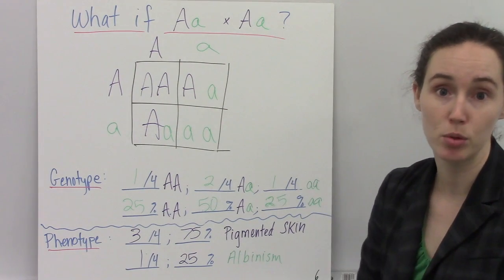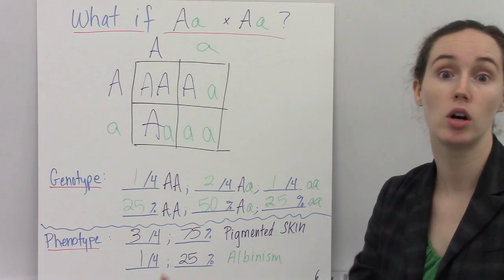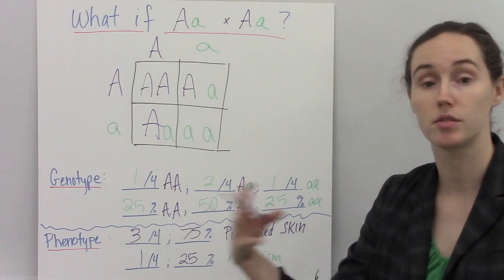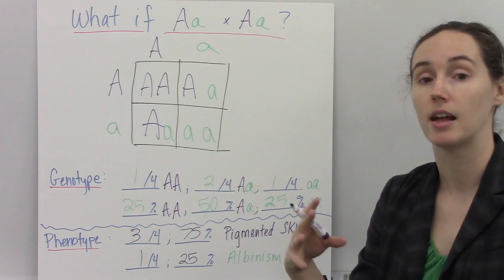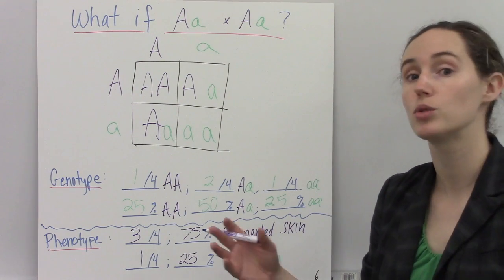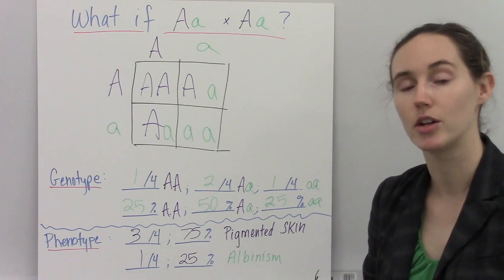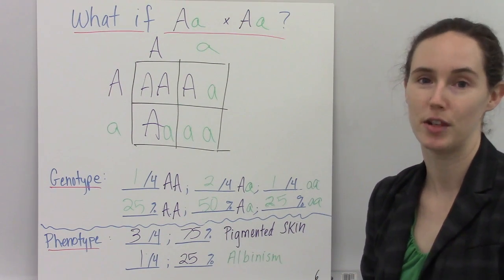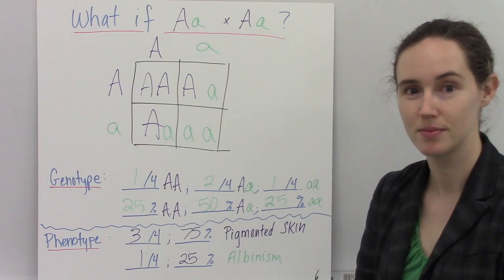These are just a couple of examples of what happens when you cross parents of different genotypes and have different offspring. You can use this tool on all sorts of crosses to figure out the likelihood of different genotypes and phenotypes from a cross.